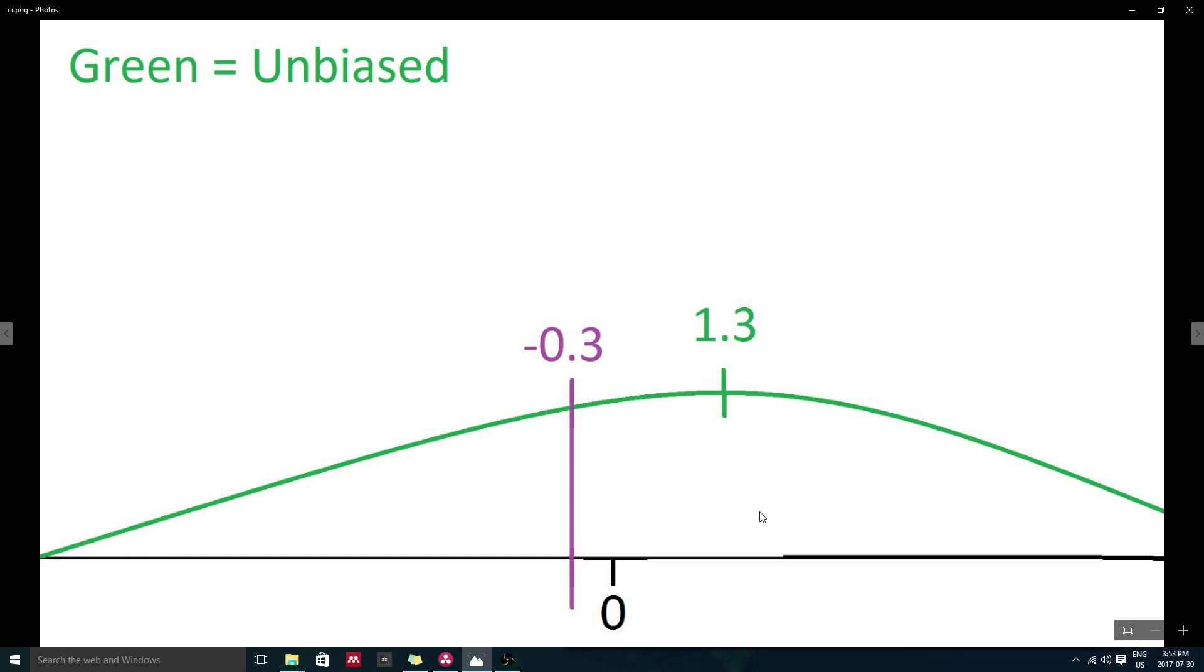However, if we can use a biased estimator that does not point to the exact parametric value of x2's regression coefficient, but has substantially less variance, we actually have a higher probability of obtaining an estimate close to the true value of the parameter.